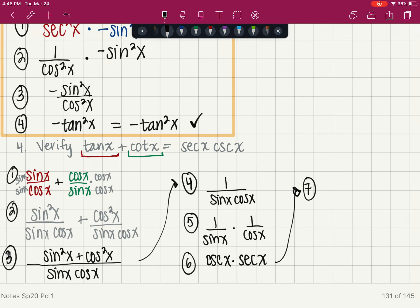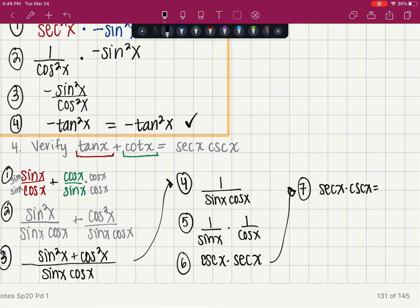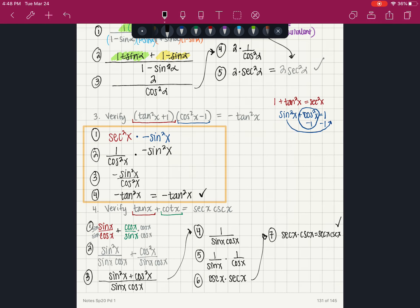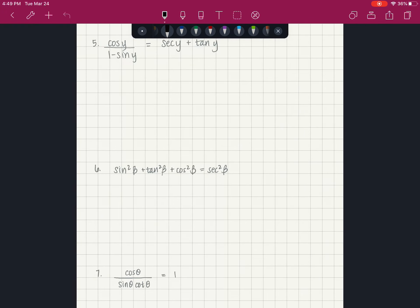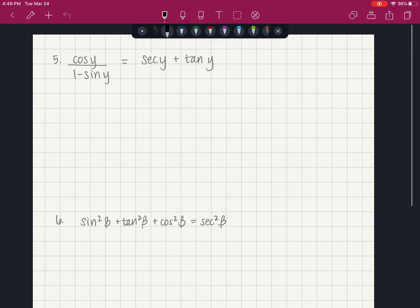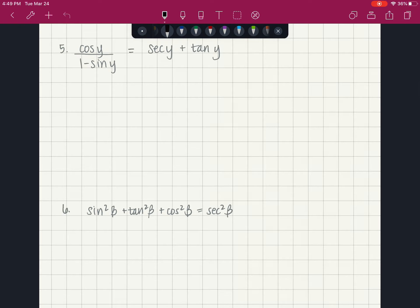I'm going to use the commutative property. So a times b is equal to b times a. So that's going to be secant of x times cosecant of x is equal to secant of x times cosecant of x. Check. And that's going to conclude these examples. We'll do a few more. I definitely do address some of those other skills in the next video that are so crucial to verifying these identities.